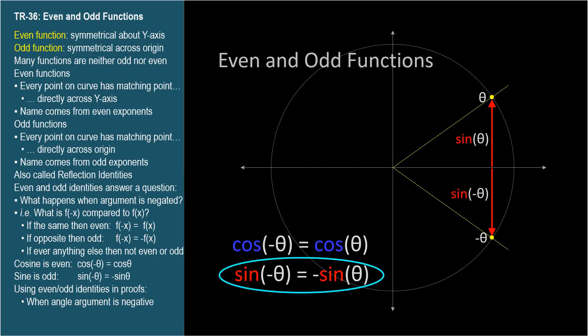Sometimes these odd and even trig identities are called reflection identities. In fact, there are more reflection identities reflected about different axes. I'll cover these in the next video, TR-37.